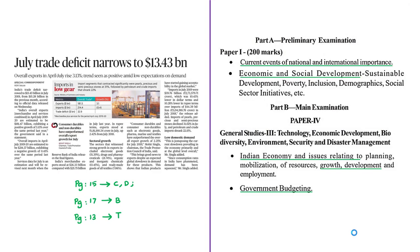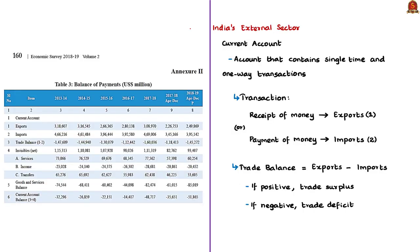This news article discusses the terms trade deficit, exports and imports. All these terms are related to India's foreign trade, nothing but India's external sector. In page 116, volume 2 of the economic survey for the financial year 2018-2019, a table named balance of payments is mentioned.